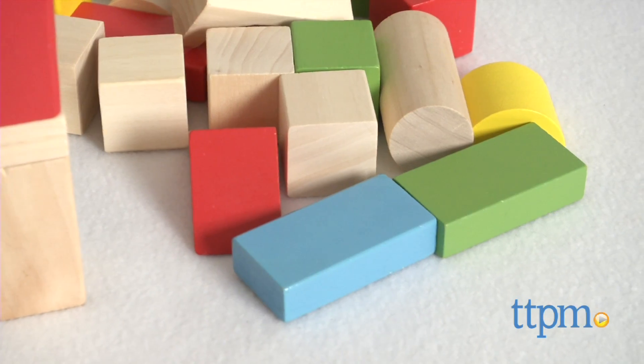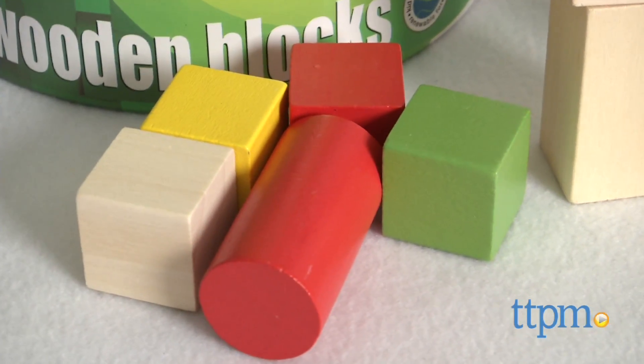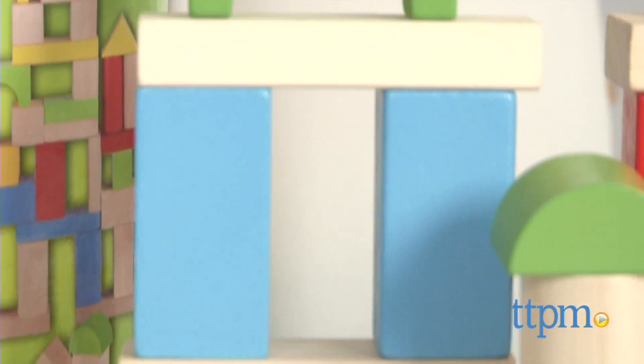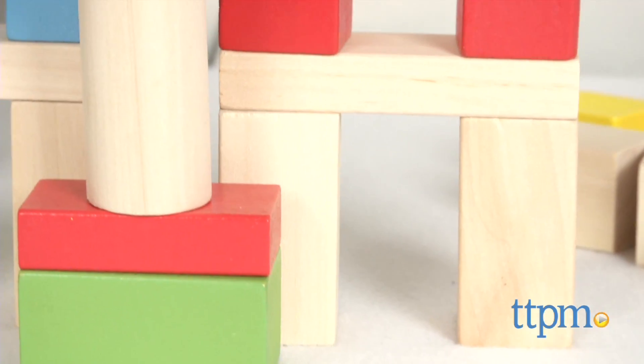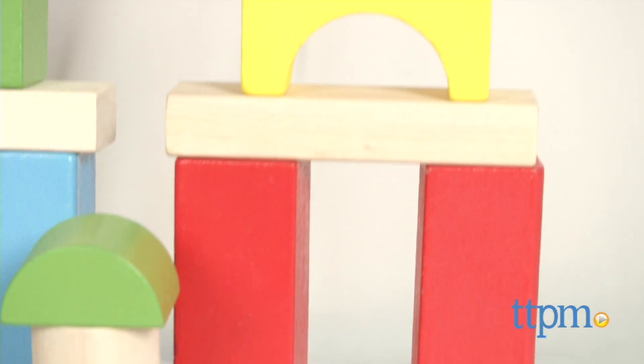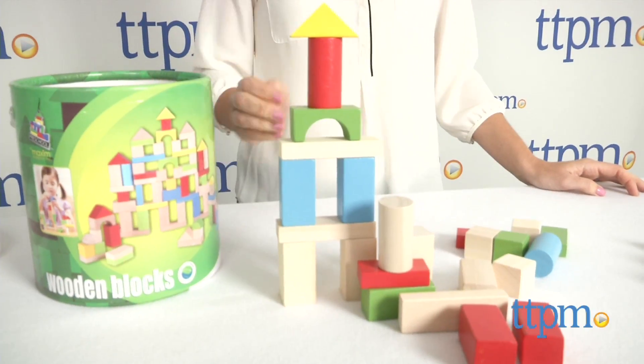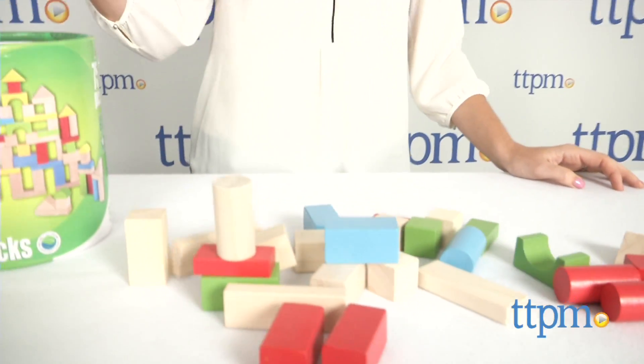Colors include red, green, yellow, blue, and natural wood. The largest block in the set measures 3 1/2 inches long, so these are on the smaller side. They're really nice quality, yet are still light, which is great since kids seem to find knocking down their creations even more fun than building them.